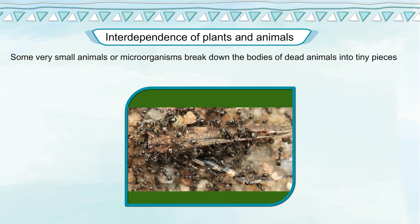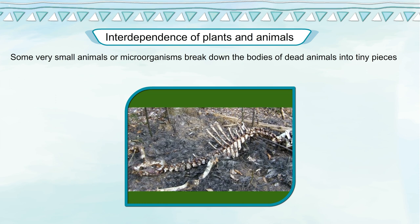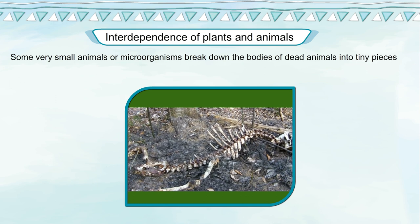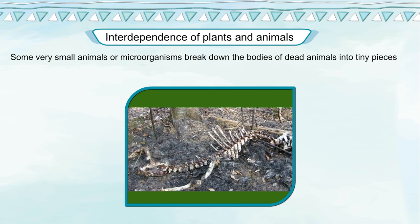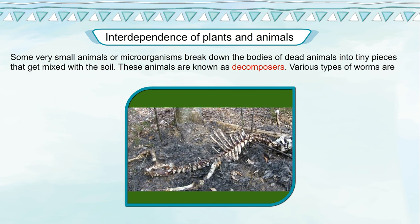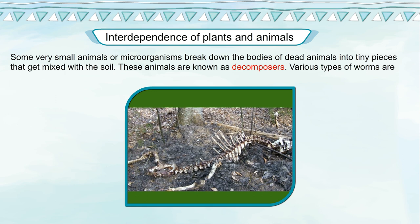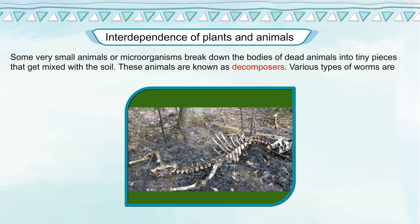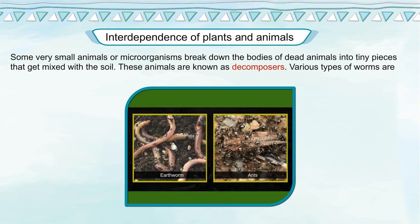Some very small animals or microorganisms break down the bodies of dead animals into tiny pieces that get mixed with the soil. These animals are known as decomposers. Various types of worms are examples of decomposers.